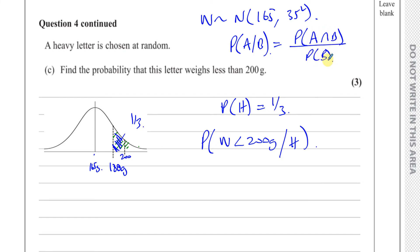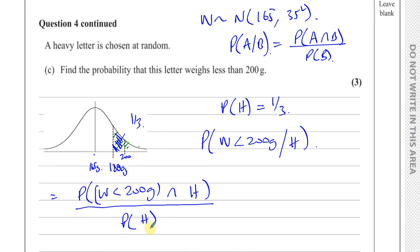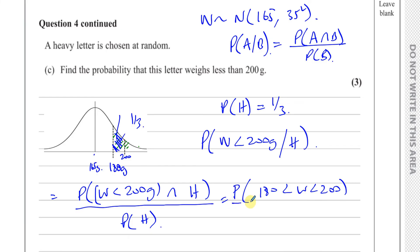We need to find the probability that W lies between 180 and 200, then divide by P(W > 180). So the intersection is P(180 < W < 200), which equals P(W < 200) minus P(W < 180). I already know P(W < 180) corresponds to an area of 0.6666.